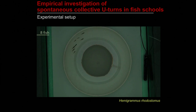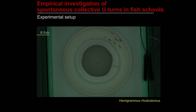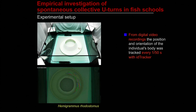We found that when groups of these fish swim freely in a ring-shaped tank, they regularly change their direction of motion from clockwise to anticlockwise and vice versa. With this experimental setup, we can record a very large number of these collective U-turns, and by tracking the position and heading of each individual within a group, we can analyze the interactions between fish during these collective U-turns and how information propagates within the group.